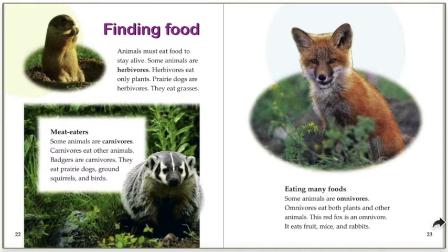Finding food. Animals must eat food to stay alive. Some animals are herbivores — herbivores eat only plants. Prairie dogs are herbivores; they eat grasses. Herbivores only eat plants and no meat. Some animals are carnivores — carnivores eat other animals. Badgers are carnivores; they eat prairie dogs, ground squirrels, and birds. So while a prairie dog only eats plants and is an herbivore, a badger eats other animals and is a carnivore.